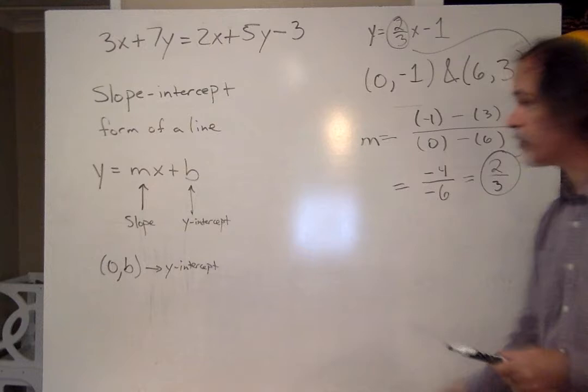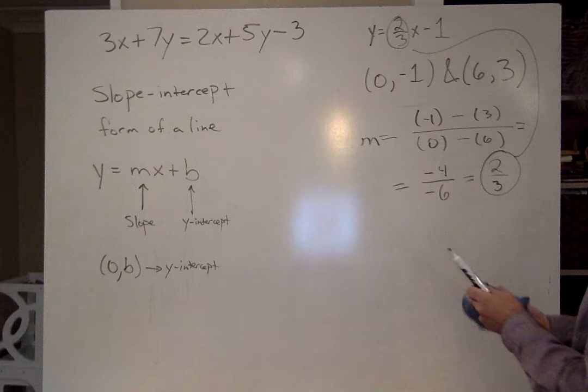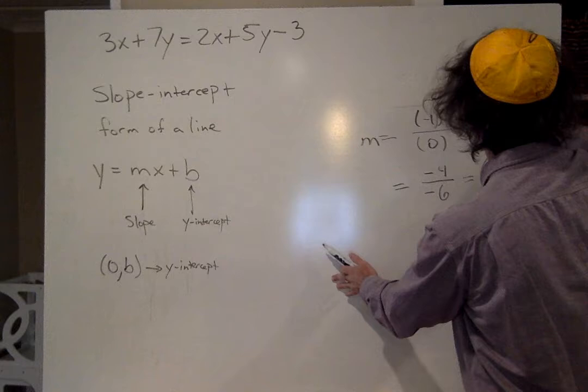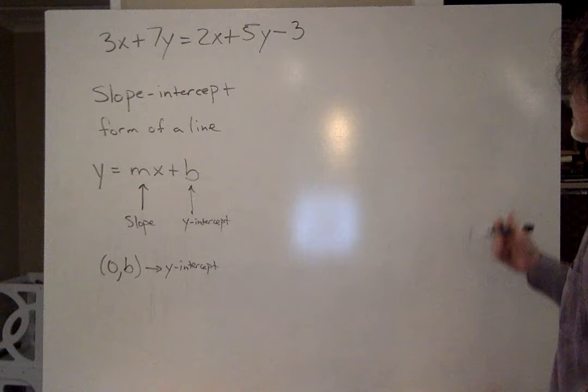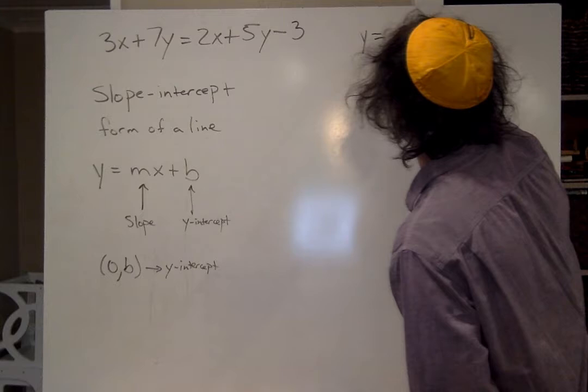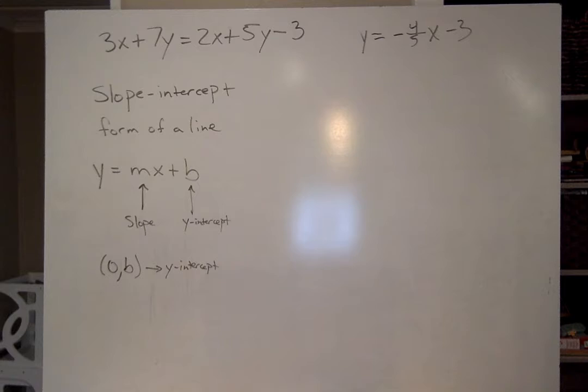That makes this form of the equation for a line really, really easy to use. So let's just do some here. Let me... I want to leave that. I'm going to erase this. Okay. So... Let me make one up. y equals negative 4/5 x minus 3. Okay.